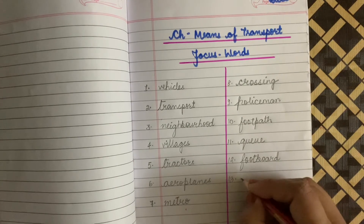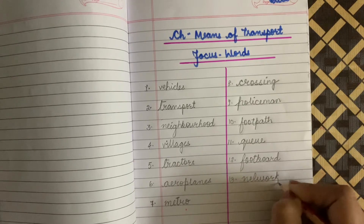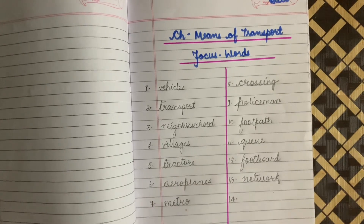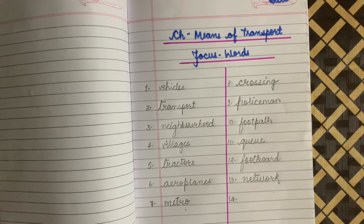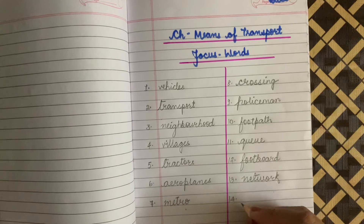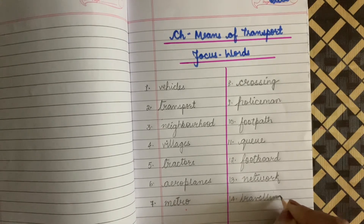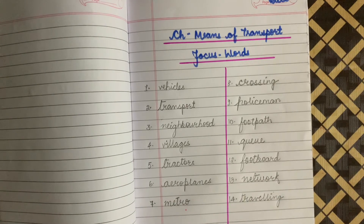Write the next word: Network. N-E-T-W-O-R-K, Network. And the last word is Travelling. T-R-A-V-E-L-L-I-N-G, Travelling.